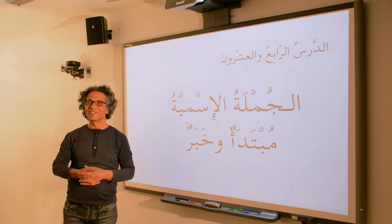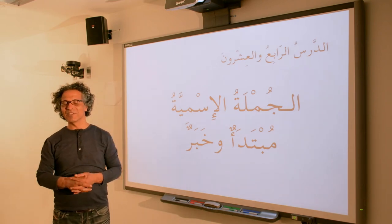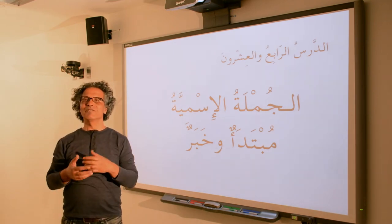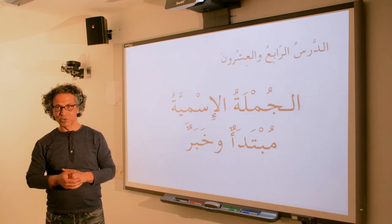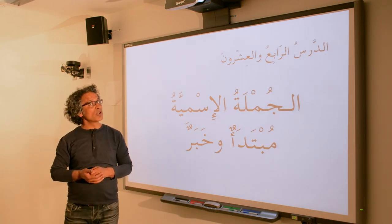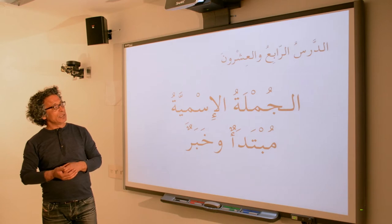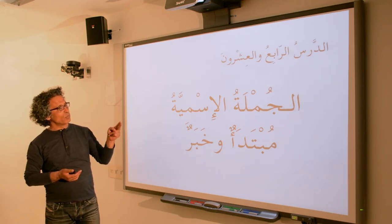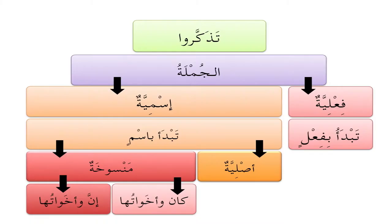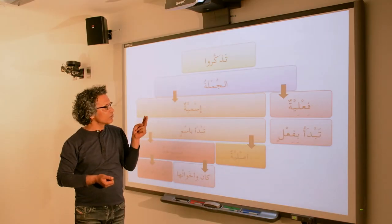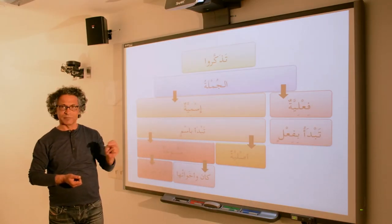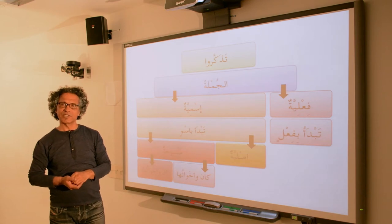طلاب العربية، طالبات العربية، أهلاً وسهلاً بكم في درس جديد من دروس المنحة. الدرس الرابع والعشرون: الجملة الإسمية، مبتدأ وخبر. الجملة in Arabic is either فعلية, a verbal sentence that starts with a verb, or إسمية, a nominal sentence that starts with a noun.